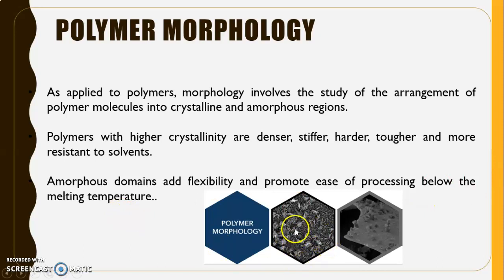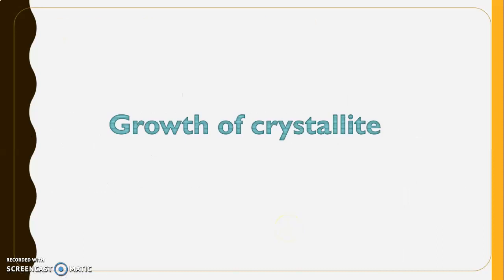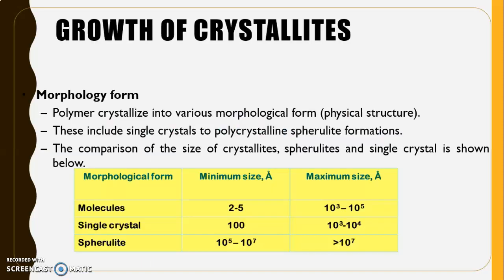The first section looks at the growth of crystallites. Polymers crystallize into various morphological forms, including single crystals to polycrystalline spherulite formation. The size comparison shows that molecules have 2 to 5 angstroms, single crystals have 100 angstroms, and spherulites range from 10^5 to 10^7 angstroms.